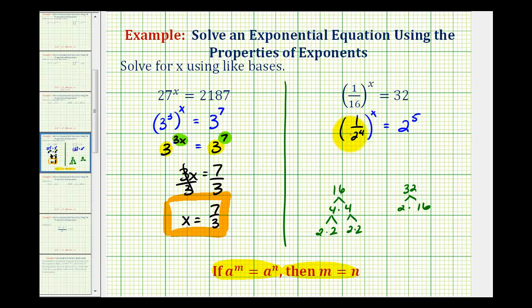Remember, we can move this up into the numerator, but it would change the sign of the exponent. So, 1 over 2 to the 4th is equal to 2 raised to the power of negative 4, all this is raised to the power of x, and this is equal to 2 to the 5th.